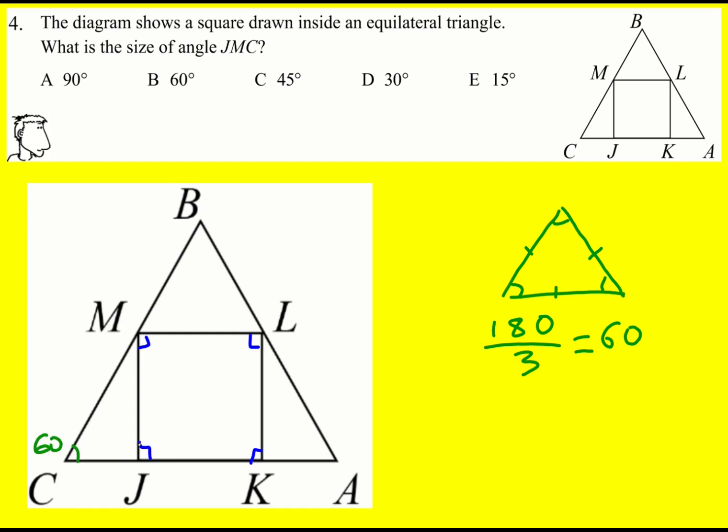Angles on a straight line add to 180, so that is also 90, meaning that this missing angle is going to be...